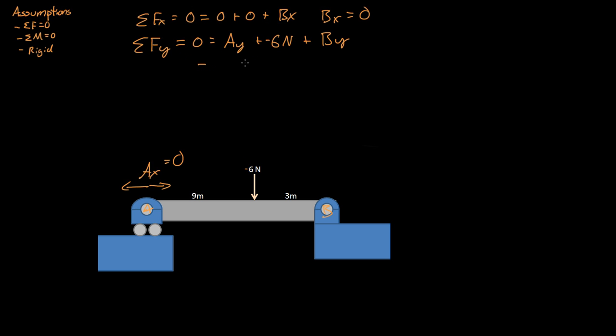It's going straight down. So this goes over here. That just turns into six newtons must equal AY plus BY.